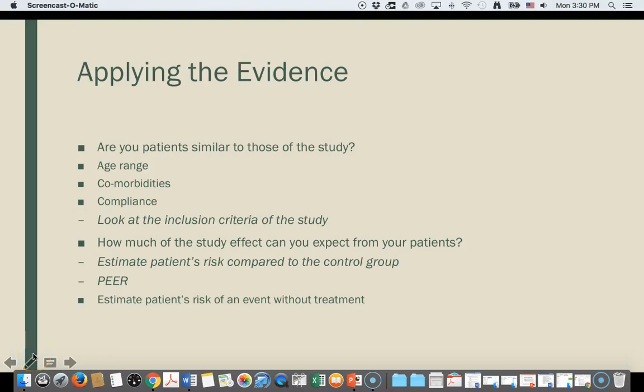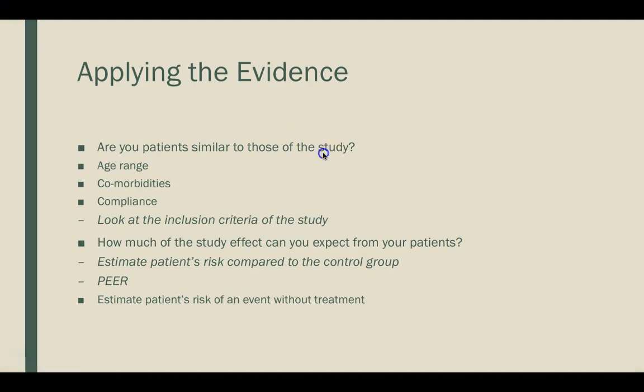We're at the appraisal stage but also starting to apply the evidence — step four in our process. When you take that appraised information, some thoughts to keep in mind: are the patients similar to those in your study, both on age range and comorbidities? If you're doing a study on tissue healing, did you account for diabetes? Is that similar to your patient? What else did your patient have going on — maybe an ankle sprain but also in the middle of finals with mental stress?